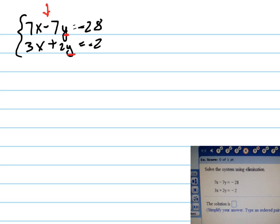Because you can already see that the signs are the opposite, one's a negative, one's a positive. And so I'm going to multiply the top equation by 2 and I'll put that new equation over here: 14x minus 14y equals negative 56.